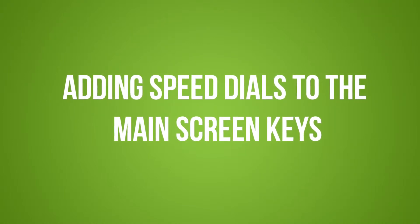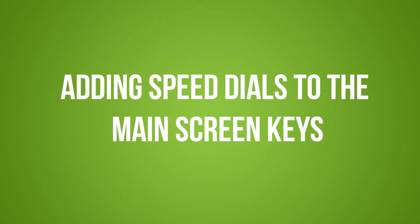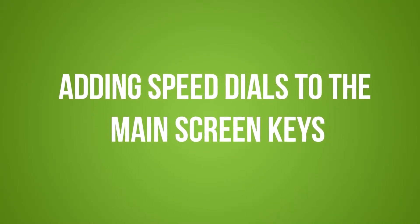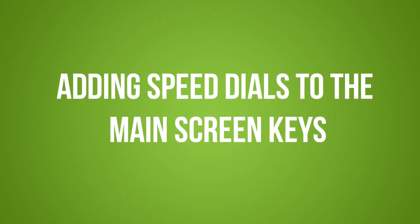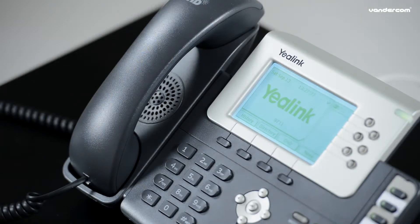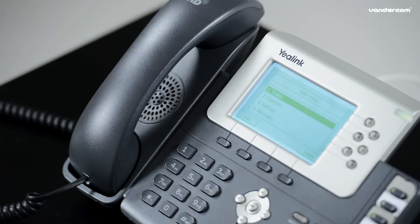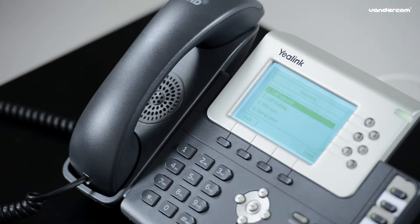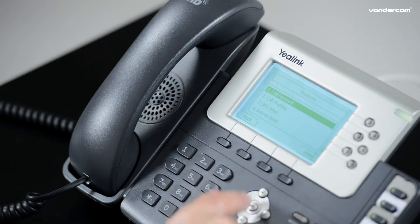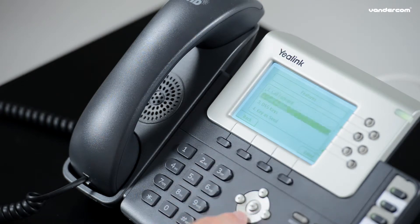Adding speed dials to the main screen keys. Press the menu soft key. Use the down arrow to select Features or press 2. Scroll using the down arrow key to DSS Keys or press number 3 and enter.